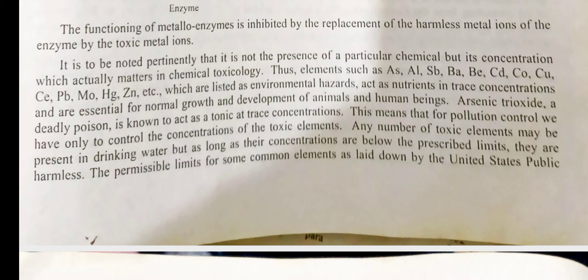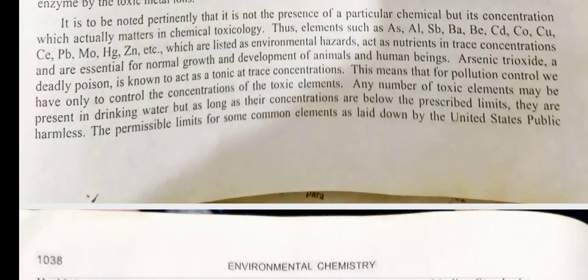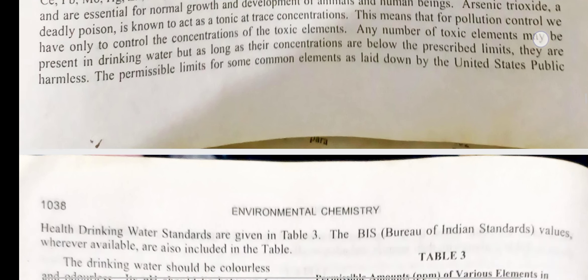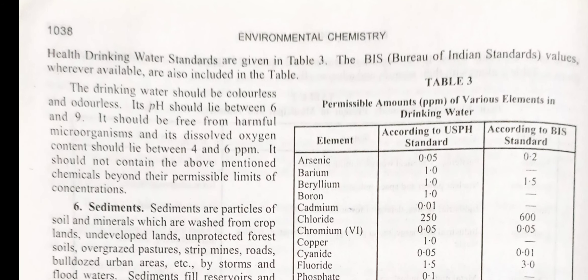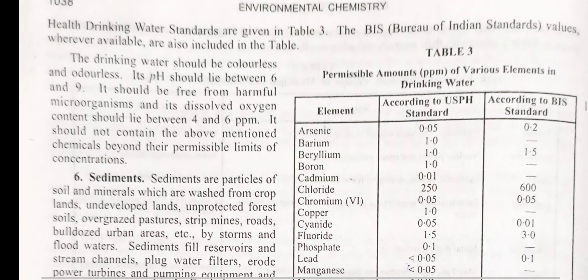This means that for pollution control we have only to control the concentration of toxic elements. Any number of toxic elements may be present in drinking water, but as long as their concentrations are below the prescribed limits they are harmless. The permissible limits for some common elements are laid down by the United States Public Health Drinking Water Standards, given in Table 3, and the Bureau of Indian Standards values, wherever available, are also included. The drinking water should be colorless and odorless. Its pH should lie between 6 and 9. It should be free from harmful microorganisms. Its dissolved oxygen content should lie between 4 and 6 ppm. It should not contain the above-mentioned chemicals beyond their permissible limits of concentration.